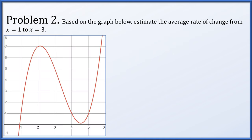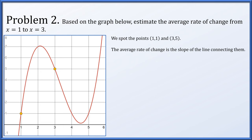In problem two, based on the graph, we need to estimate the average rate of change from x equals 1 to x equals 3. We appear to have the points (1, 1) and (3, 5). We compute the slope: delta y is 4, delta x is 2, which gives an average rate of change of 4 over 2, which is just 2.